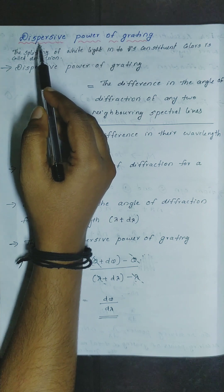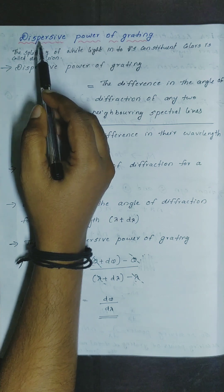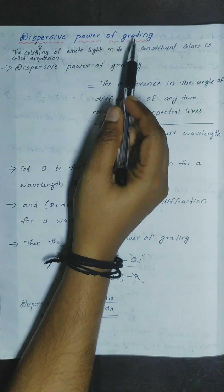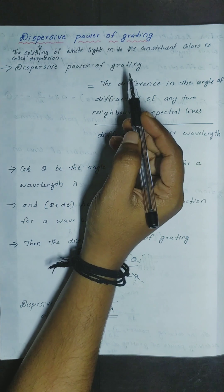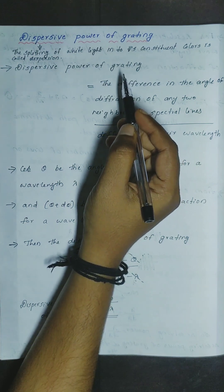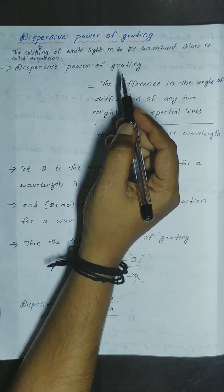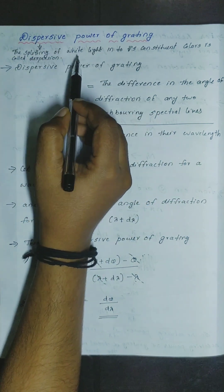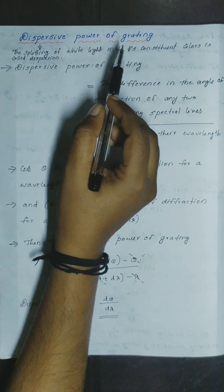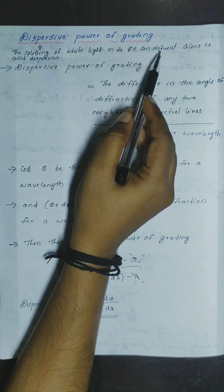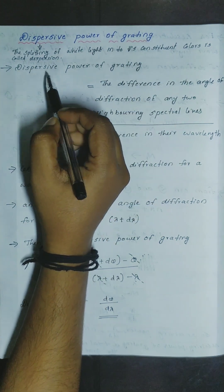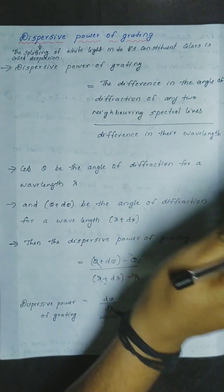Good morning to all. We are going to discuss dispersive power of grating. What is dispersion? The splitting of white light into its constituent colors is called dispersion.